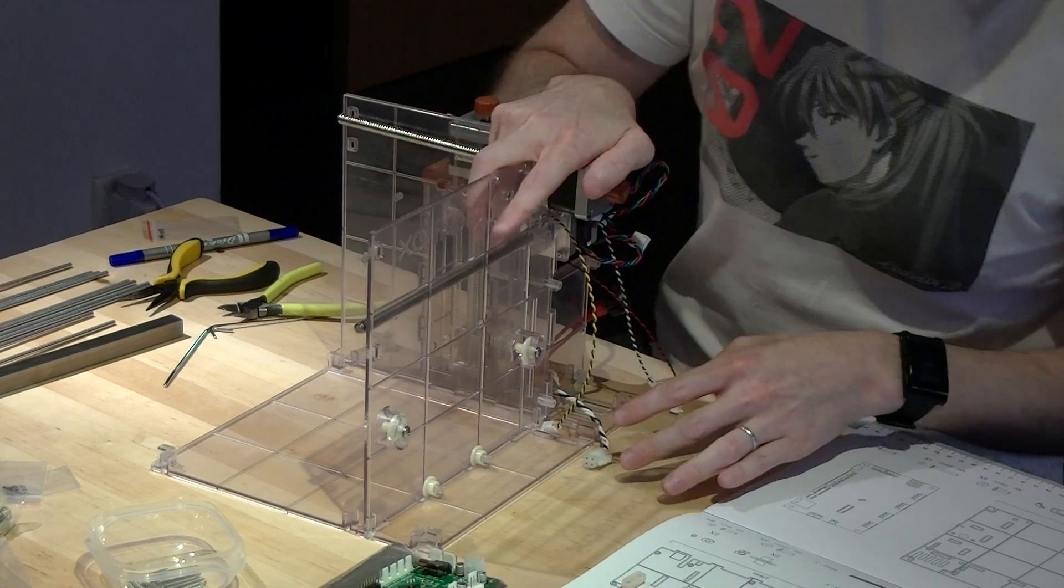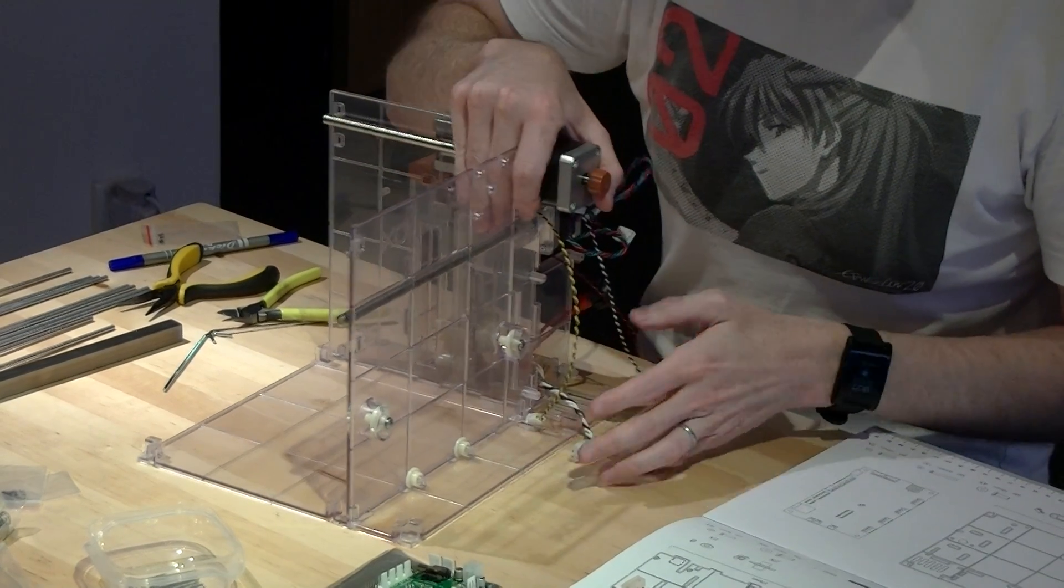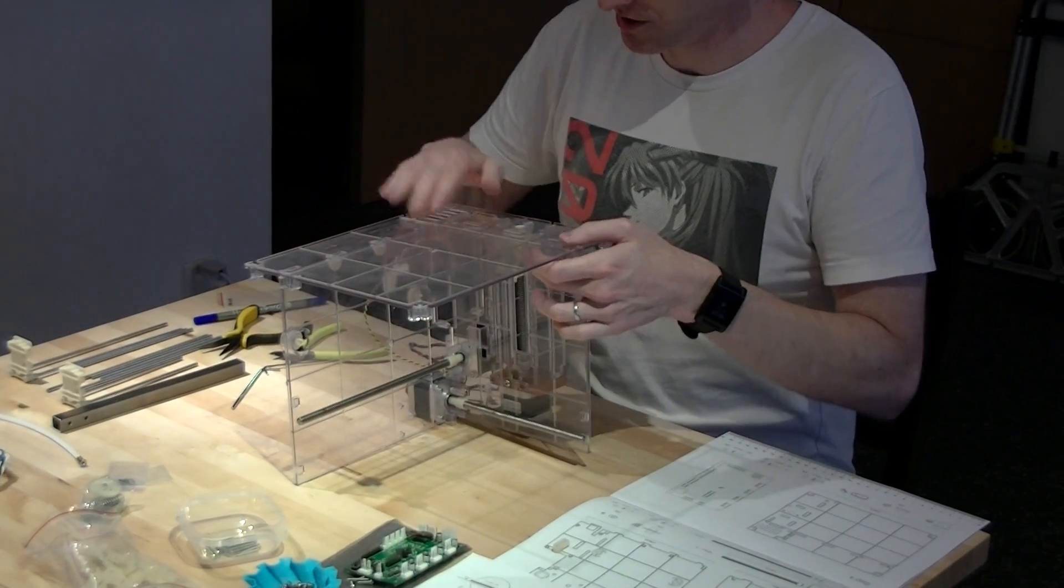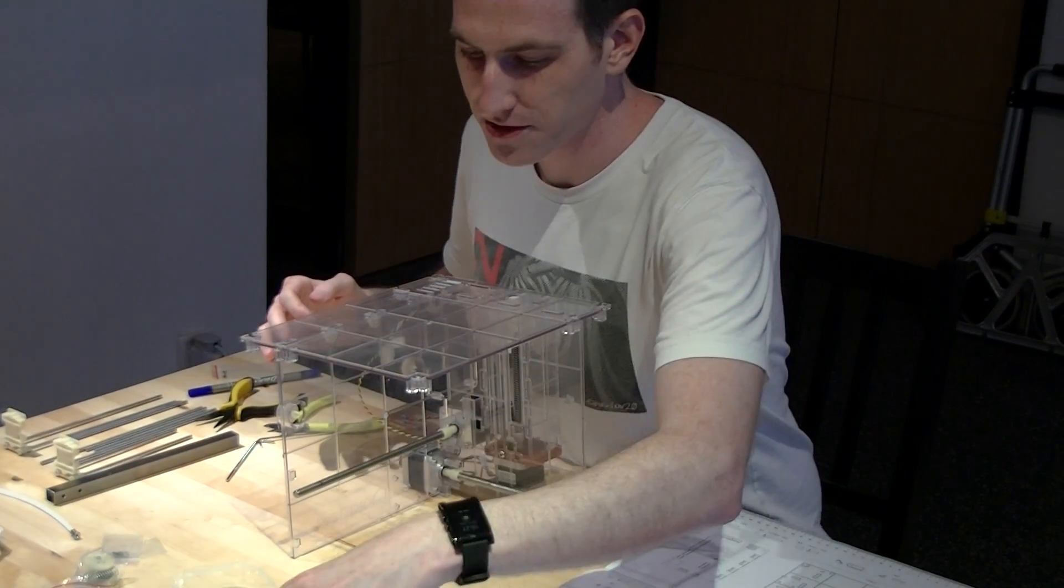And then, give it a nice firm press. And that's it. You've successfully located your chassis. Now, the next easiest step is basically just turn the whole thing upside down.